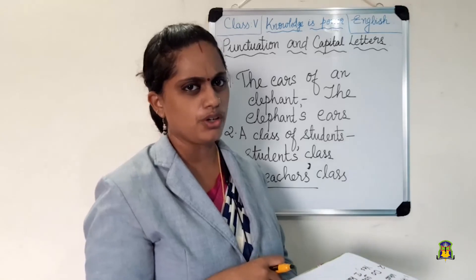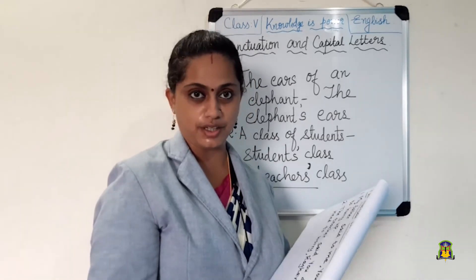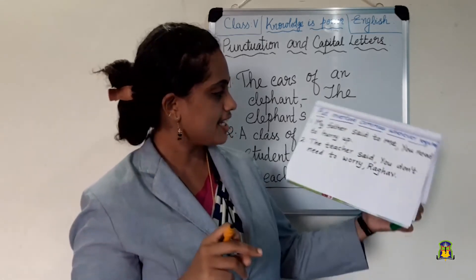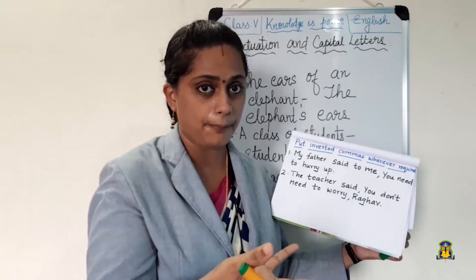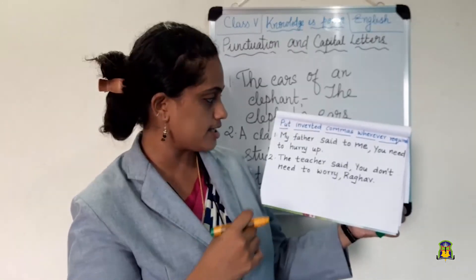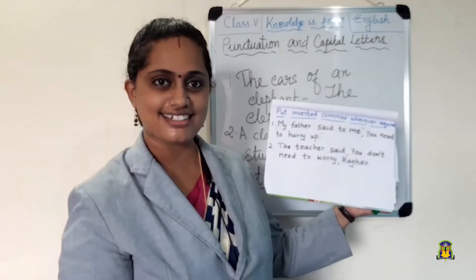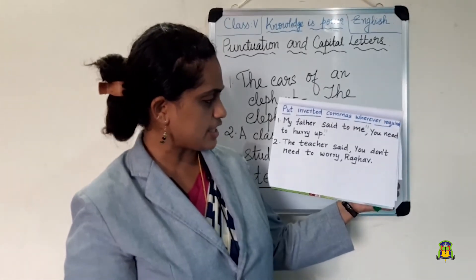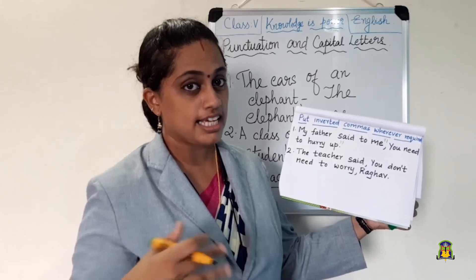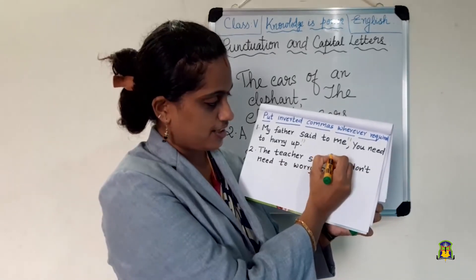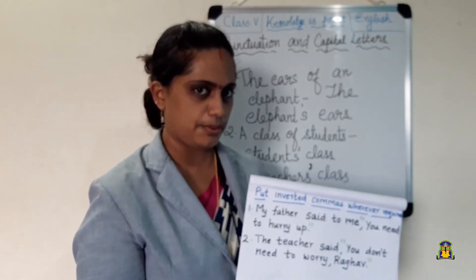Three more questions are there for you as homework. Now the next exercise: put inverted commas wherever required. You remember about inverted commas? 'My father said to me, You need to hurry up.' When we are telling the exact words of a person, we use inverted commas. Next one: 'The teacher said, You don't need to worry, Raghav.' These are the exact words of the teacher, so we put inverted commas around them. Three more questions are left that you can practice as homework.